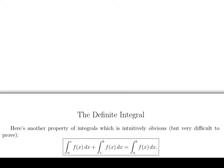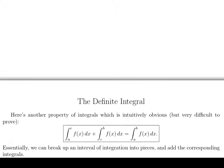If you integrate from A to B, you can break that up by integrating from A to C, and then from C to B. The idea is that we can break up an interval of integration into pieces and then add up the corresponding integrals.